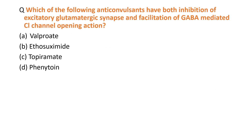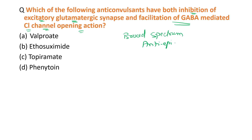The next MCQ: which of the following anti-convulsant drugs has both inhibition of excitatory glutaminergic synapse and facilitation of GABA-mediated chloride channel opening? The drug that has both these effects and broad spectrum activity is topiramate.